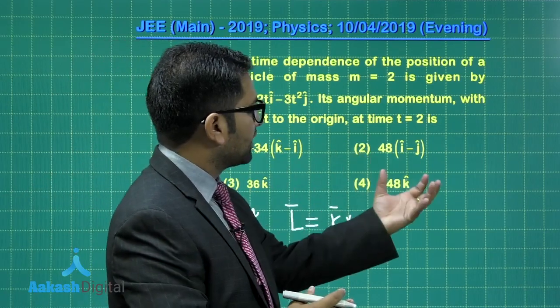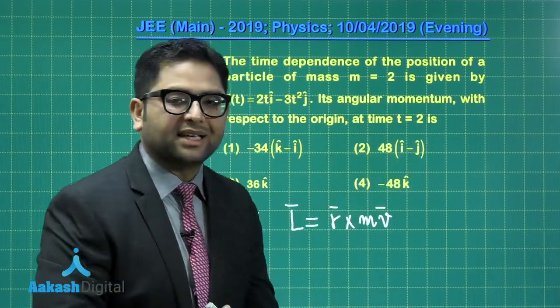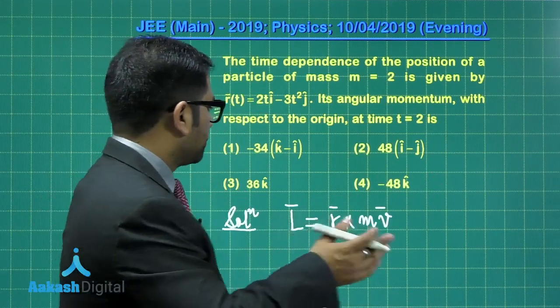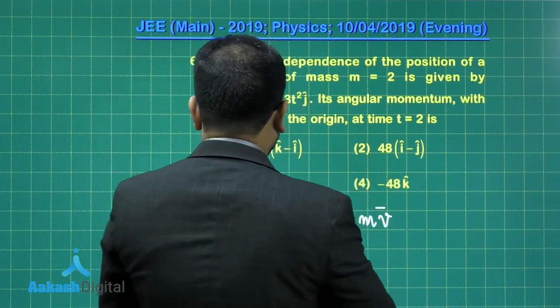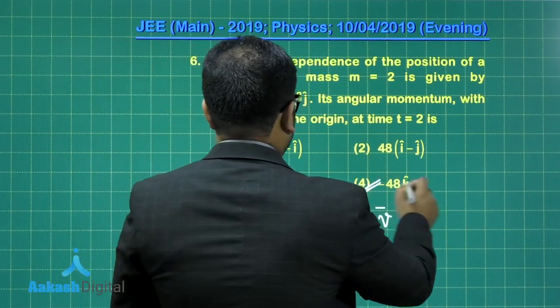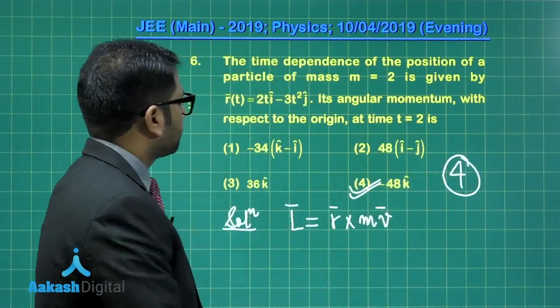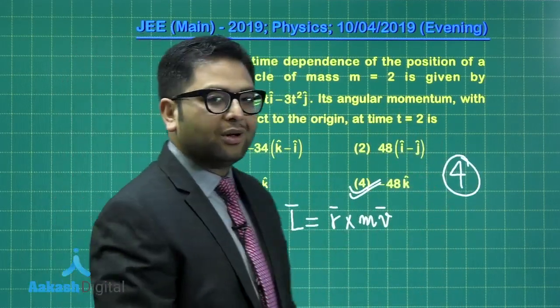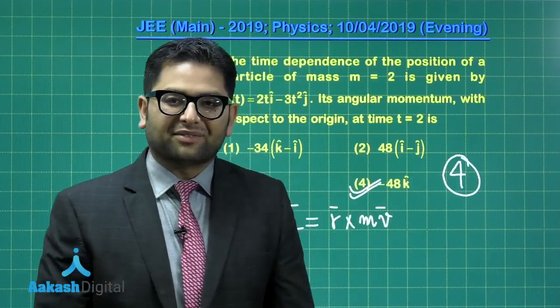Simply at the end you need to plug two seconds in place of time. That's a straightforward calculation and you would be getting option number four as the correct option. Now let's move to the next one, the seventh.